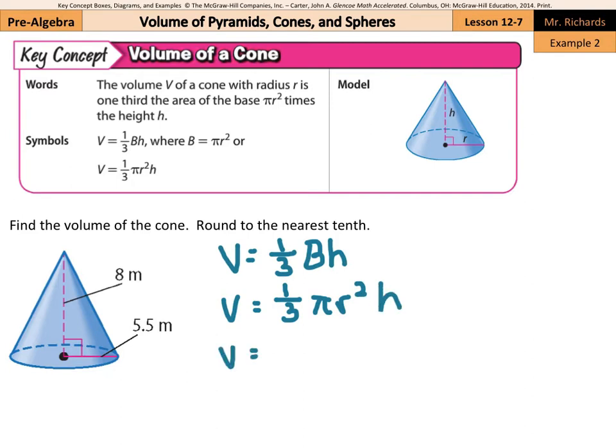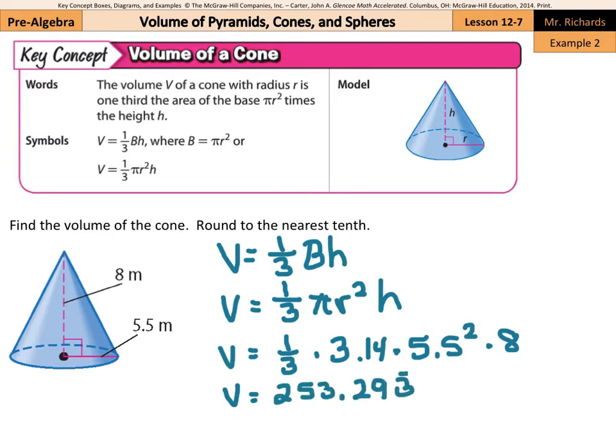So volume is going to be one-third times 3.14 times 5.5 squared times the height, which is 8. When I multiply all these numbers together, my volume is 253.29 with the 3 repeating. I'm asked to round to the nearest tenth, so I'll look over at the hundredths. The 9 is going to round the number in the tenth spot up, so volume is going to be 253.3 meters cubed.